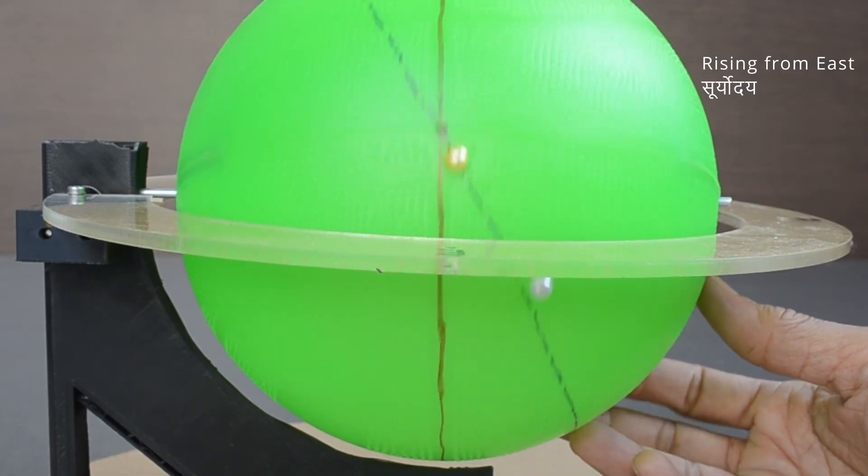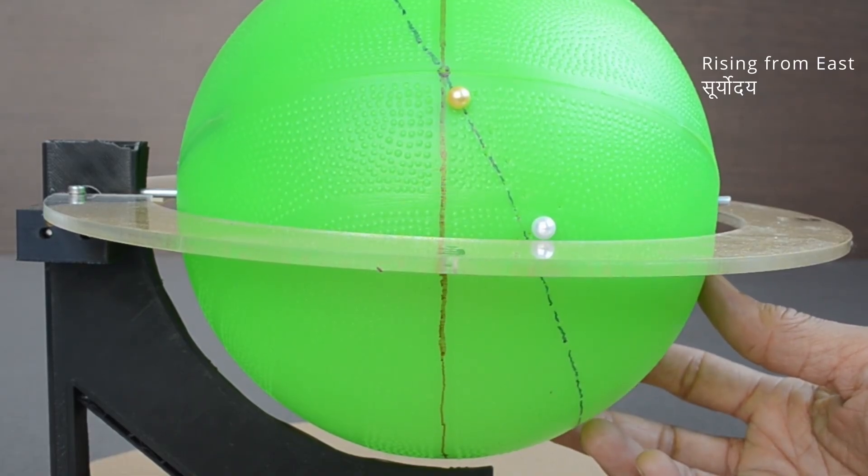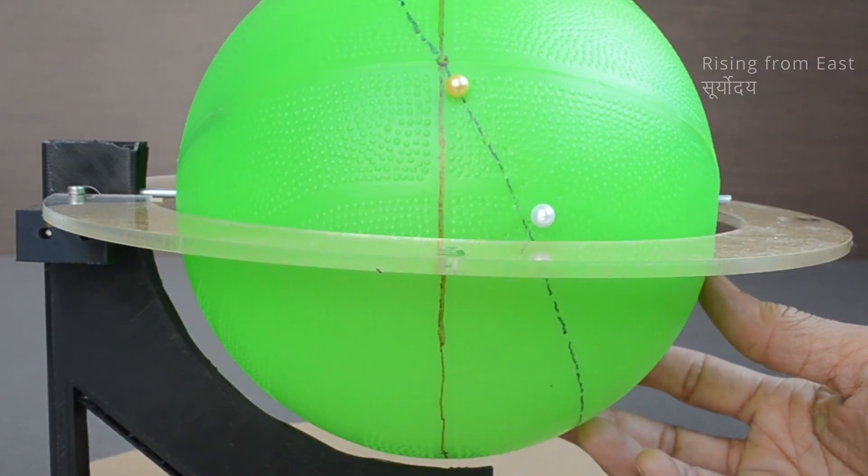On the fourth day after the new moon, that is Chaturthi, during sunrise, moon will follow the sun at the horizon. It will not be visible during the day, but only in the evening time.